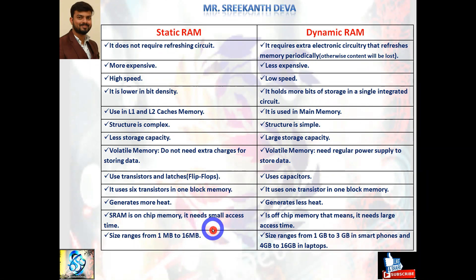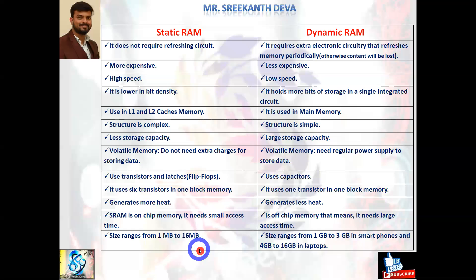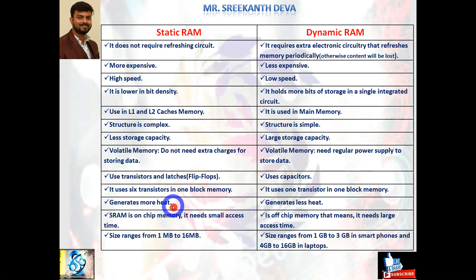SRAM is on-chip memory and needs small access time; DRAM is off-chip memory and needs larger access time. Cache memory is the next level before main memory (DRAM). SRAM access time is around 10 nanoseconds; DRAM access time is more than 50 nanoseconds. SRAM size ranges in MBs; DRAM size ranges in MBs as well as GBs. This is the major difference between SRAM and Dynamic RAM.